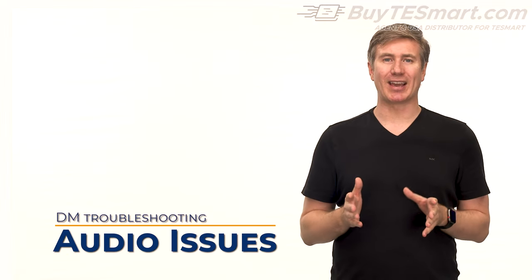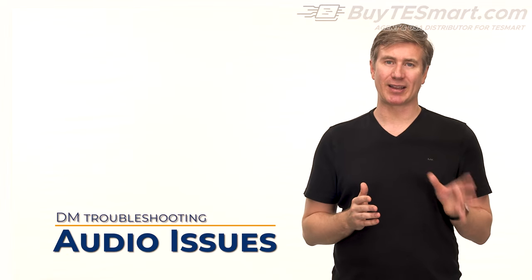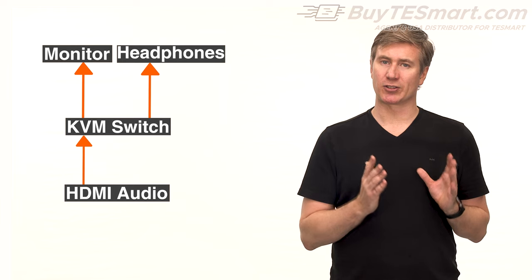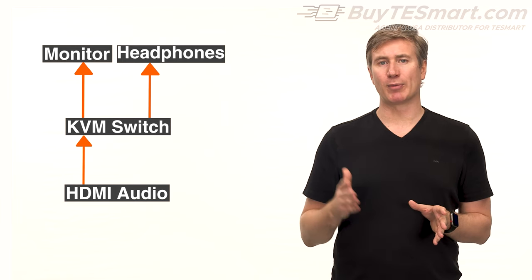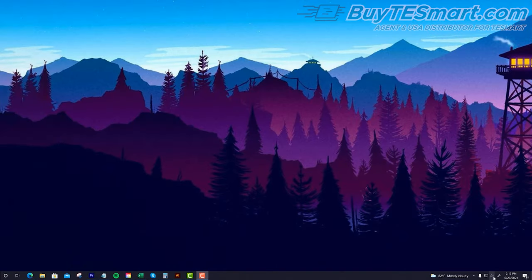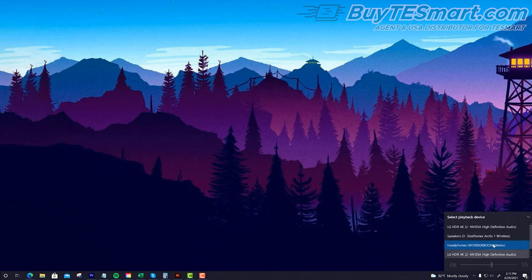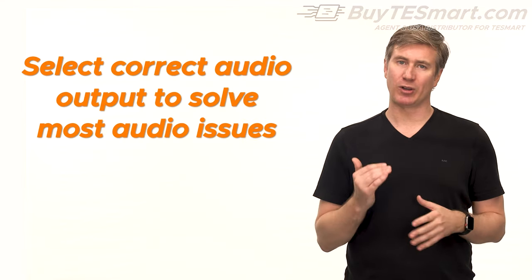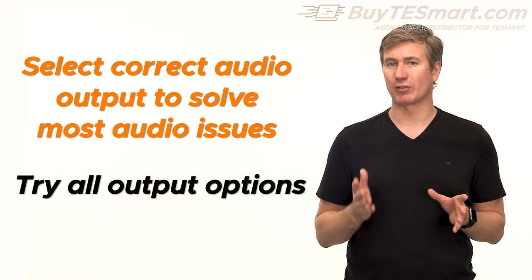It's important to understand that the KVM receives audio over the HDMI connections, and then the KVM replicates the audio to the monitor and to the analog audio output. If you're using external speakers, you're going to have to turn the volume on your monitor down. Most audio issues are caused by the operating system not selecting the correct audio output that you want. When the audio isn't selected automatically, simply click on the audio settings on your operating system, then select the option that looks like your monitors. Sometimes it's not clear, so we recommend just going through all the audio output options to find out which one is right for your setup.